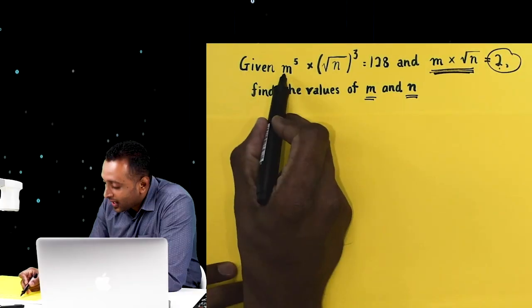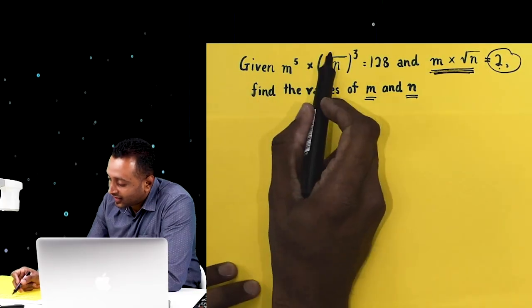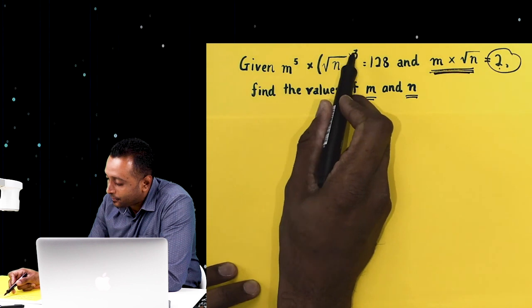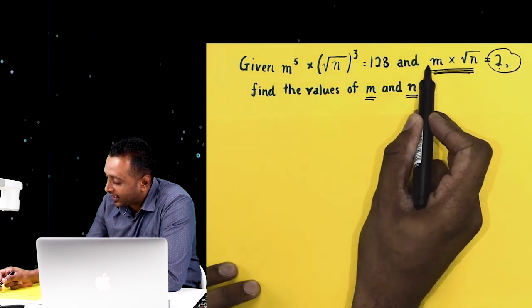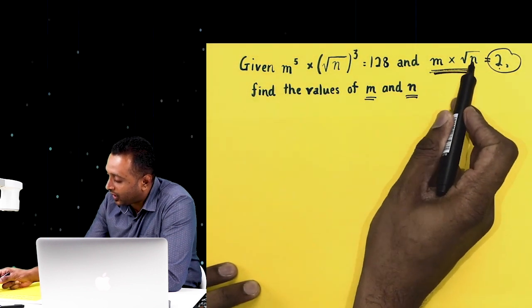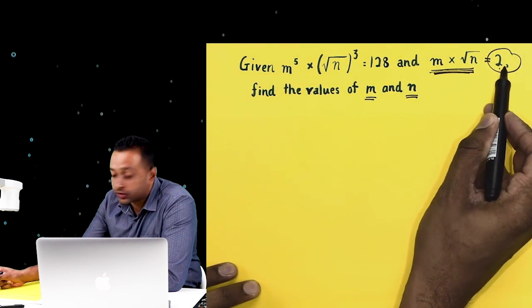Have a look at this question. m to the power 5 times square root of n to the power 3 equals 128, and m times square root n equals 2.